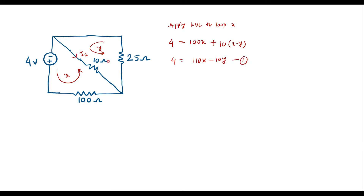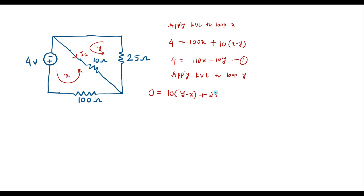Call this equation 1. Similarly, applying KVL to loop Y, there is no voltage source, so 0 equals the voltage across the 10 ohm resistor, which is 10 times (Y minus X) — we write Y minus X because we are in the Y loop and assume Y has higher magnitude — plus 25Y. Simplifying: 0 equals minus 10X plus 35Y.